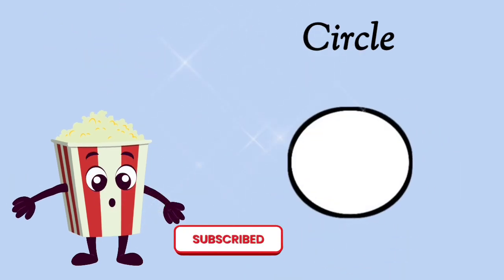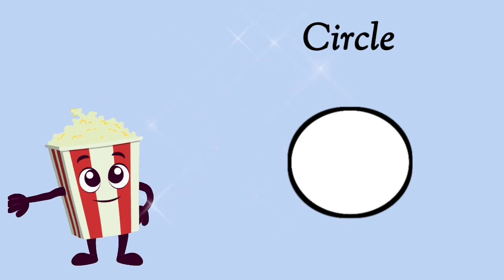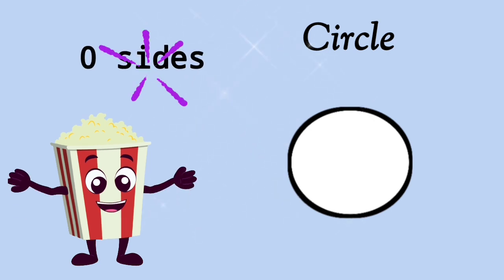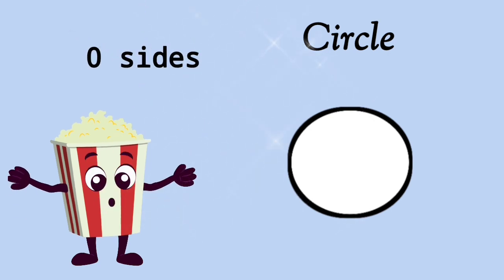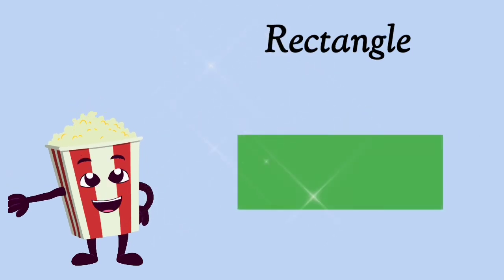This is a circle. How many sides does a circle have? Let's move and count the sides of a circle. A circle has 0 sides but has 1 curved line. This is a rectangle.